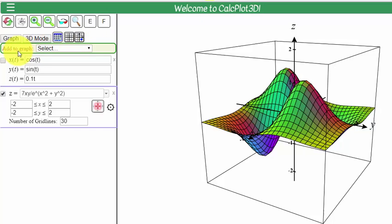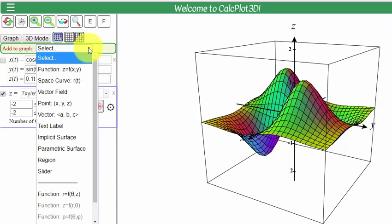The first step is under Add to Graph Select. I click that little arrow and I find in the menu Space Curve R of t. I click there.